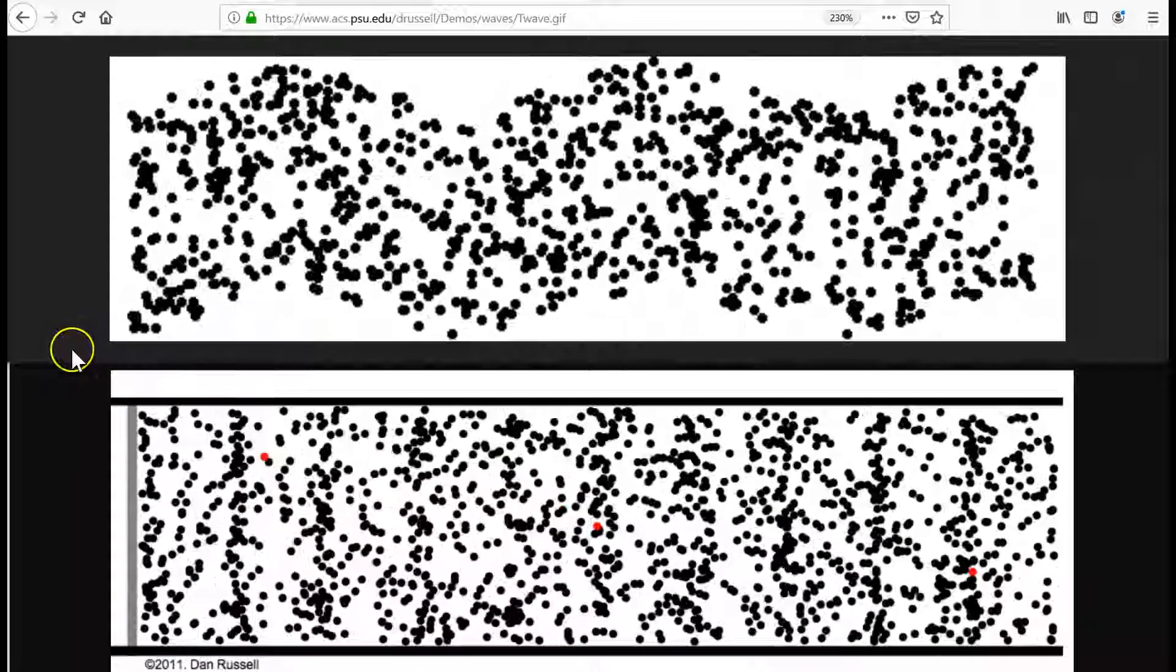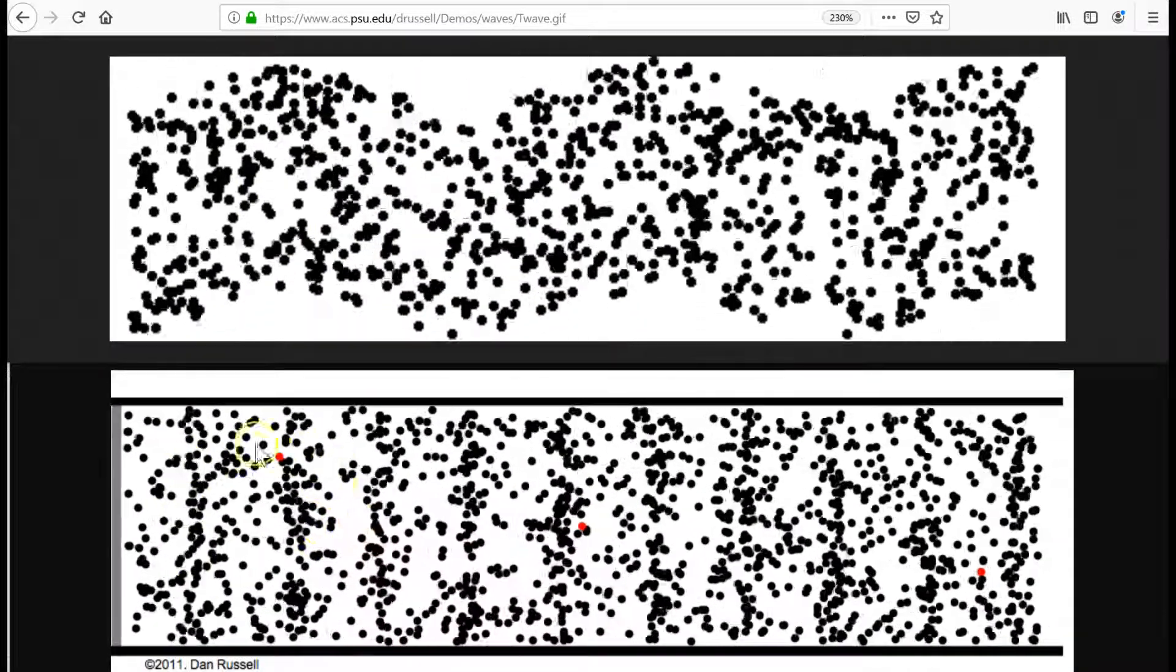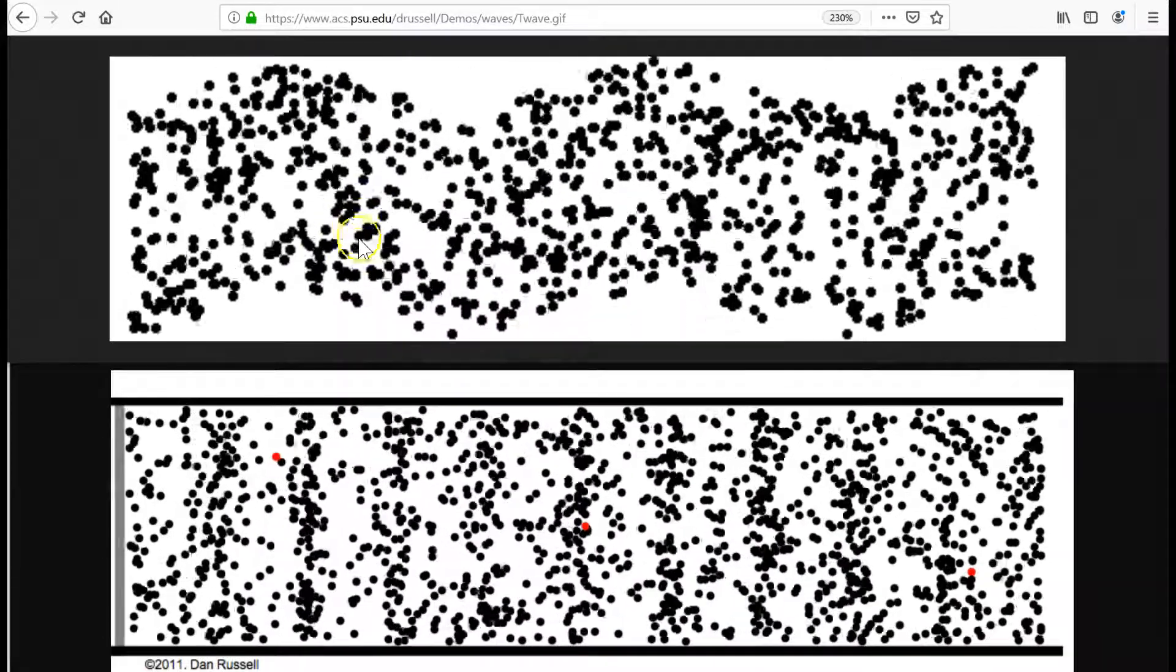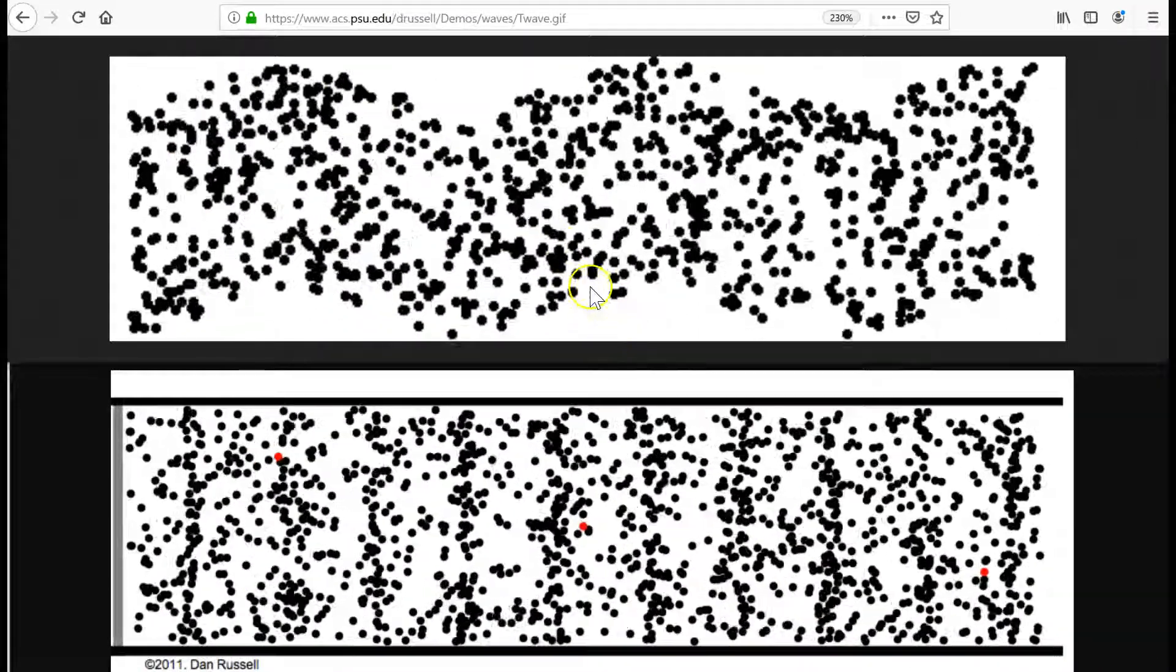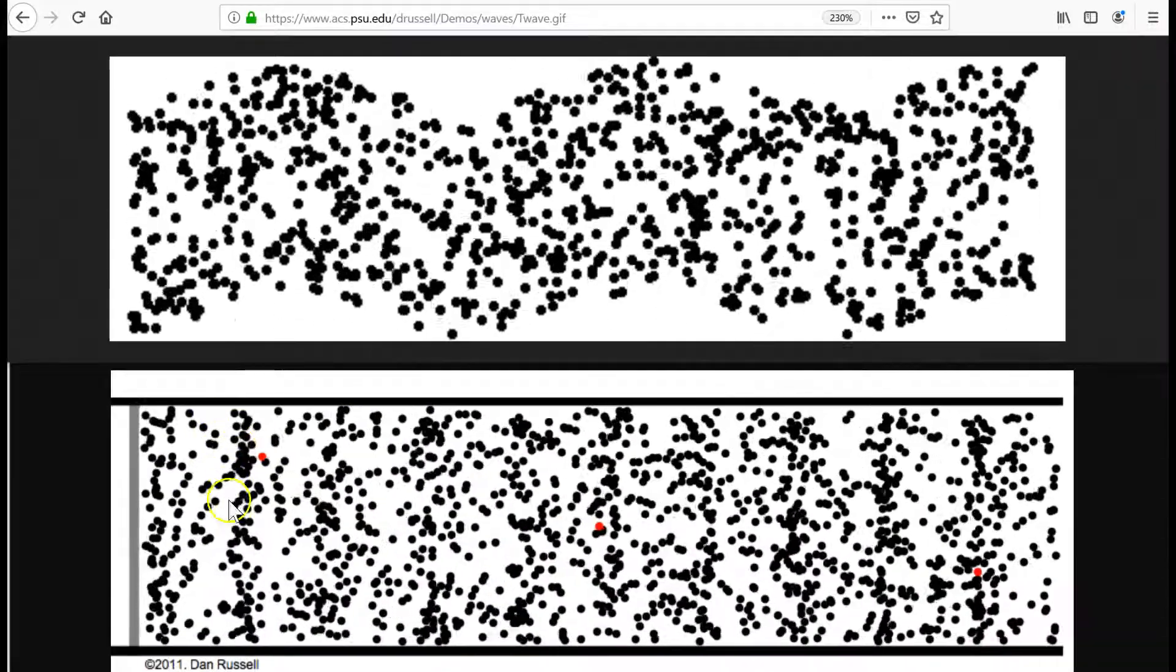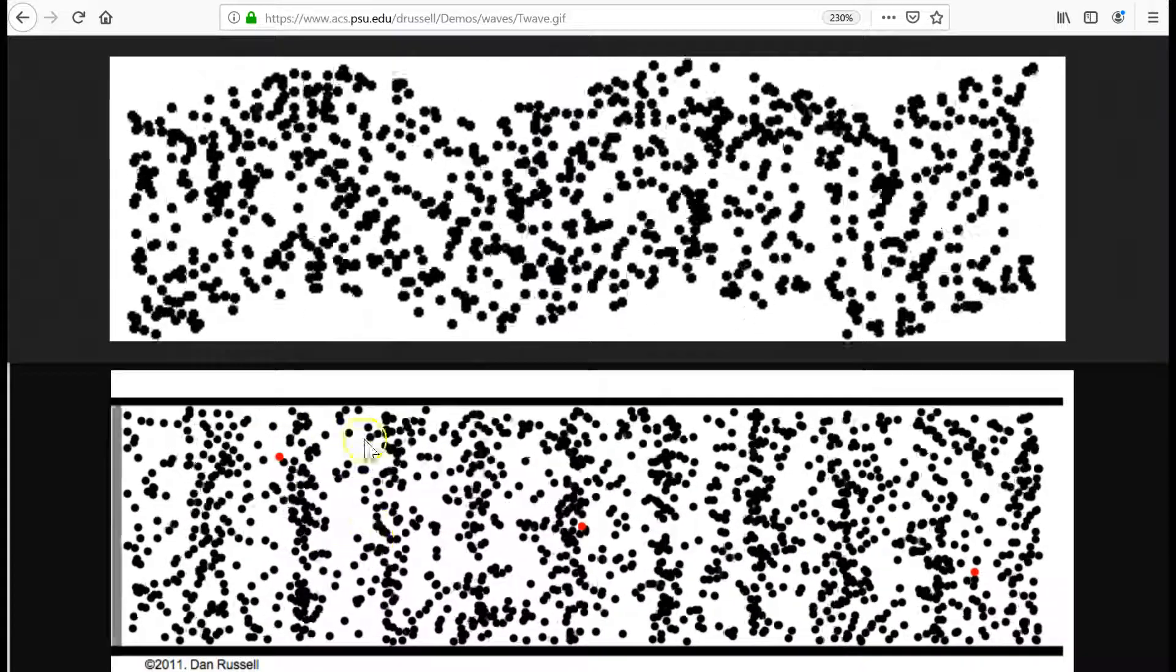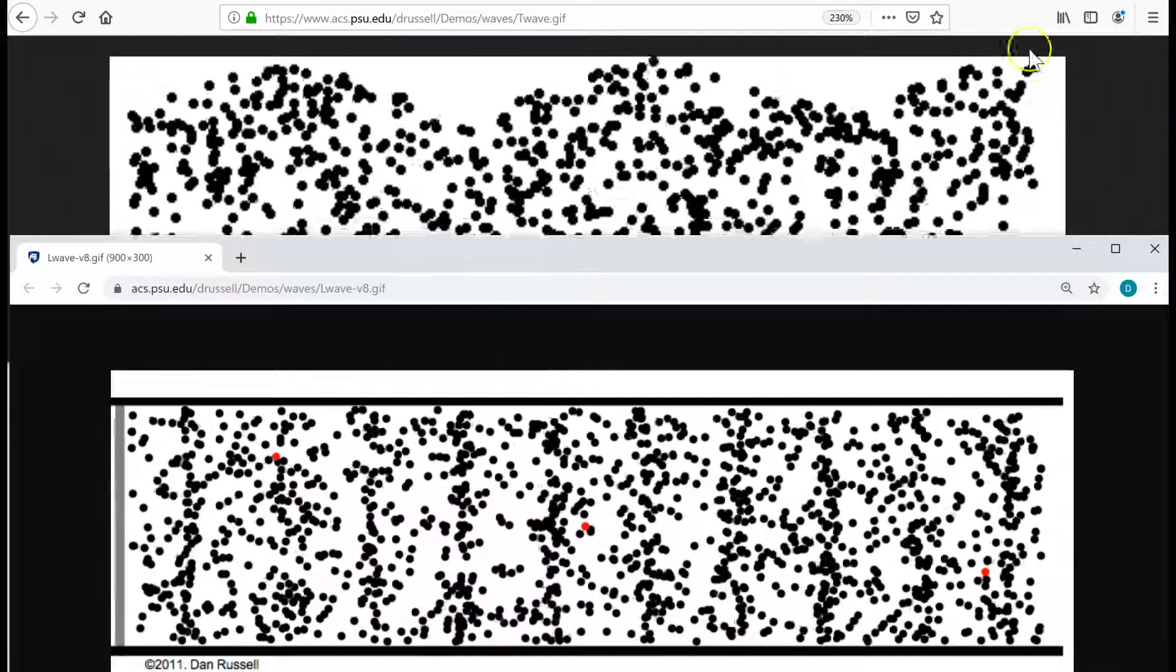When it comes to traveling or progressive waves, some look like this, and some look like this. The top is transverse, and it has crests and troughs. The bottom is longitudinal. It has compressions where the particles are pushed together, and rarefactions where the particles are spread apart.